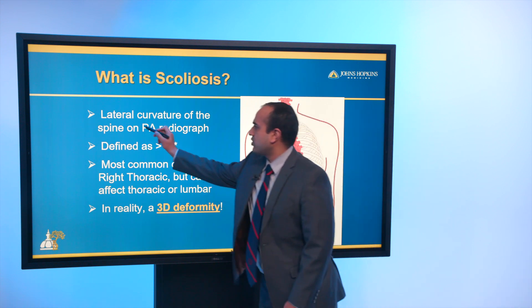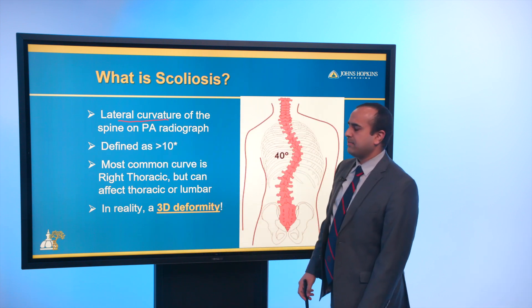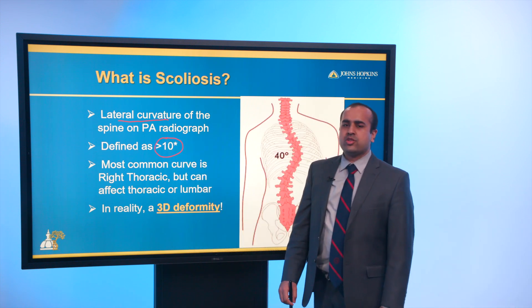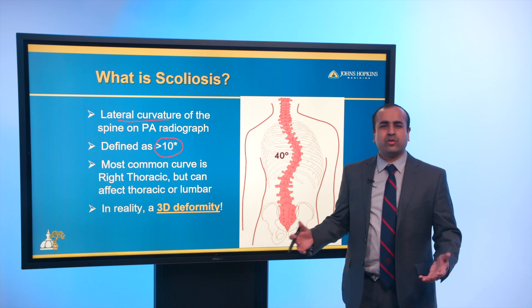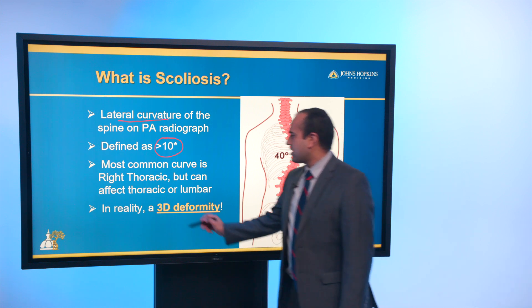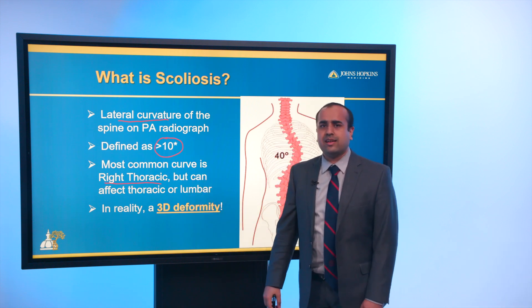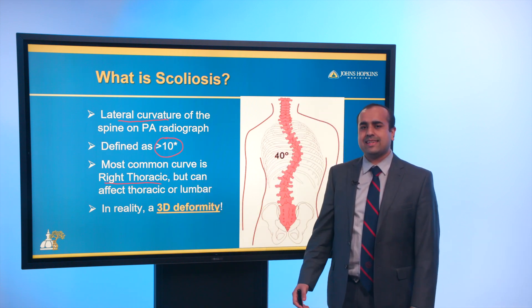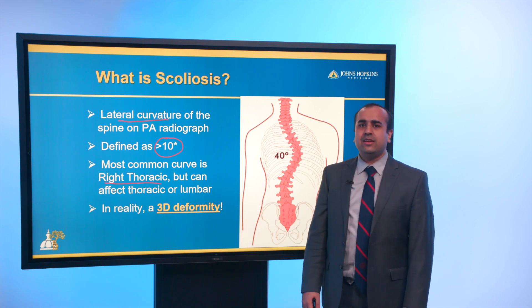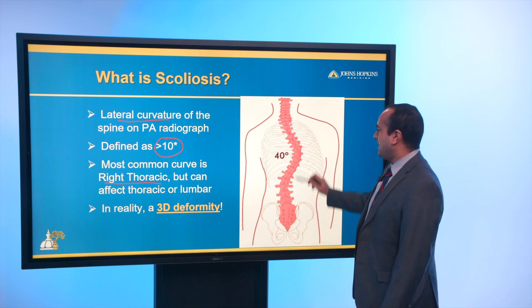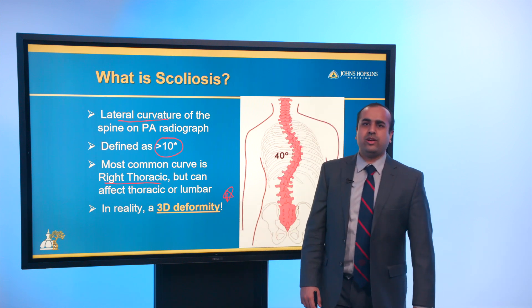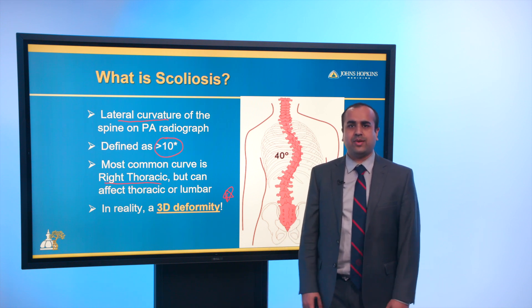Scoliosis is lateral curvature of the spine on a PA radiograph, and it's defined as more than 10 degrees. A large portion of the population has less than a 10-degree spinal asymmetry, but unless it's really above 10 degrees, it doesn't count as scoliosis. The most common curve is a right thoracic curve, but curves can be thoracic, lumbar, or left-sided. While it appears primarily to be a coronal plane issue, scoliosis is actually a three-dimensional deformity — something important to understand for both evaluation and treatment.